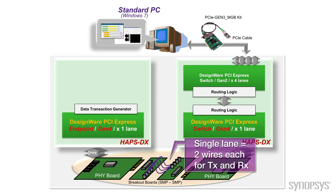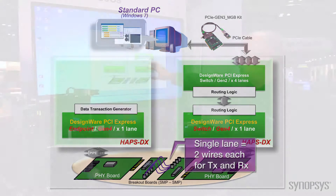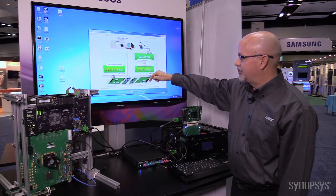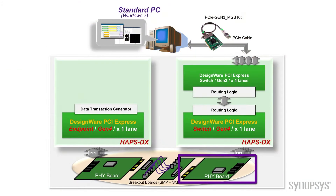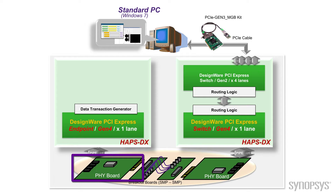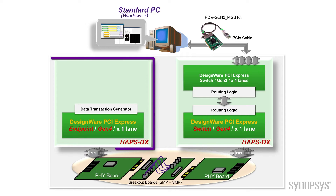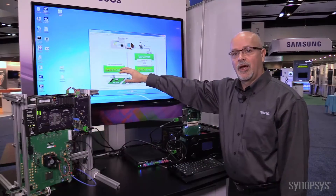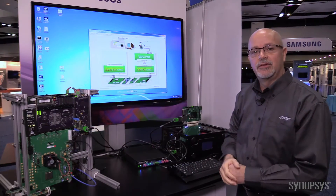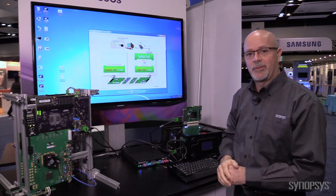We have four lanes here giving us 20 gigabytes of data on the upstream port. We're using a single lane of PCI Express Gen 4, which will give us 16 gig. The downstream port goes through our PCI Express Gen 4 PHY, across the backplane, into another PHY, and then into our application running on another HAPS DX board. This application is an endpoint device that's going to help us transfer data to do system performance measurements.